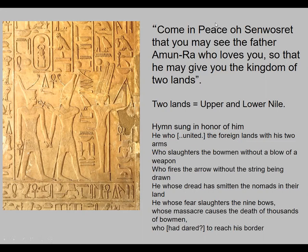He whose dread has smitten the nomads in their land, he whose fear slaughters the nine bows, whose massacre causes the death of thousands of bowmen who dared to reach his border. So he unites them really violently. Now we're going to talk about these two gods. This god is Atum, holding the Ankh, which is the breath of life and represents the immortality of the god or pharaoh.